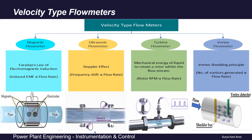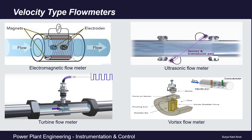The number of vortices generated are directly proportional to fluid velocity and thus to the fluid flow rate. So velocity type flow meters are basically four types: electromagnetic, ultrasonic, turbine, and vortex flow meters.